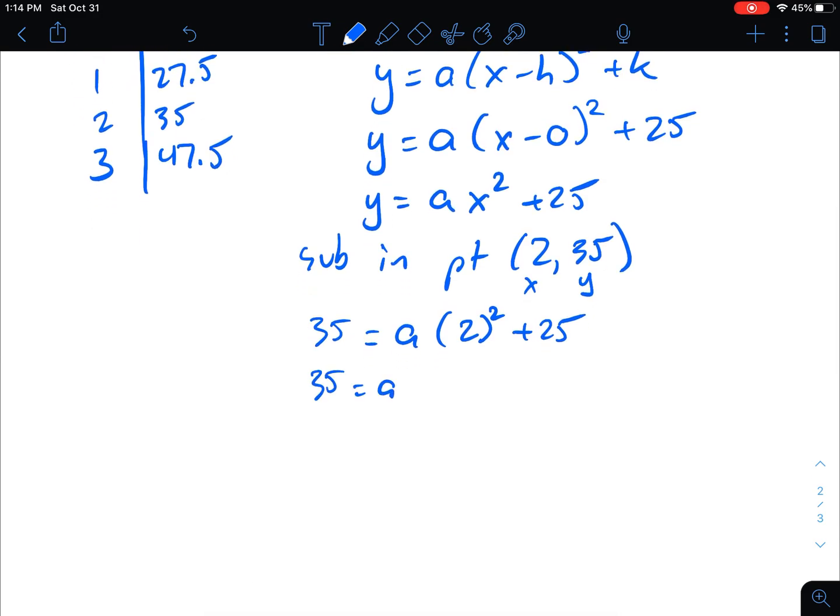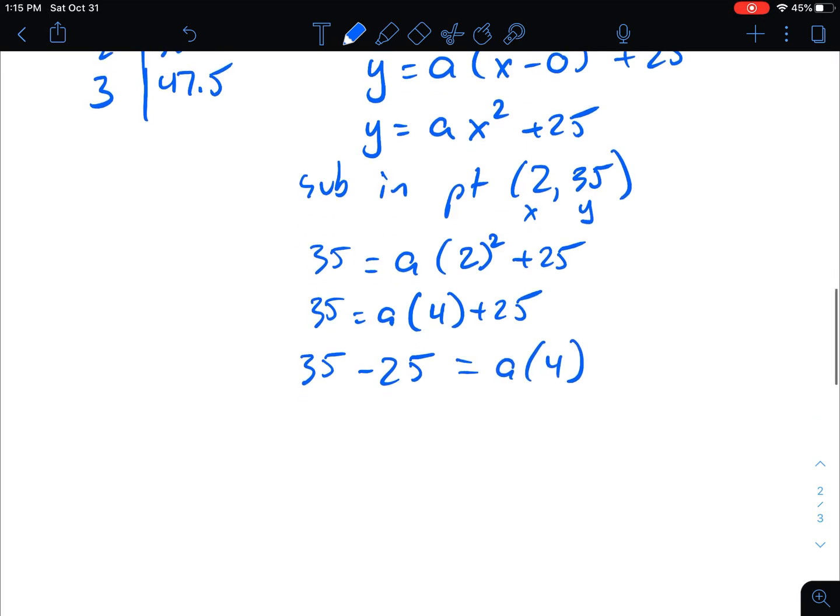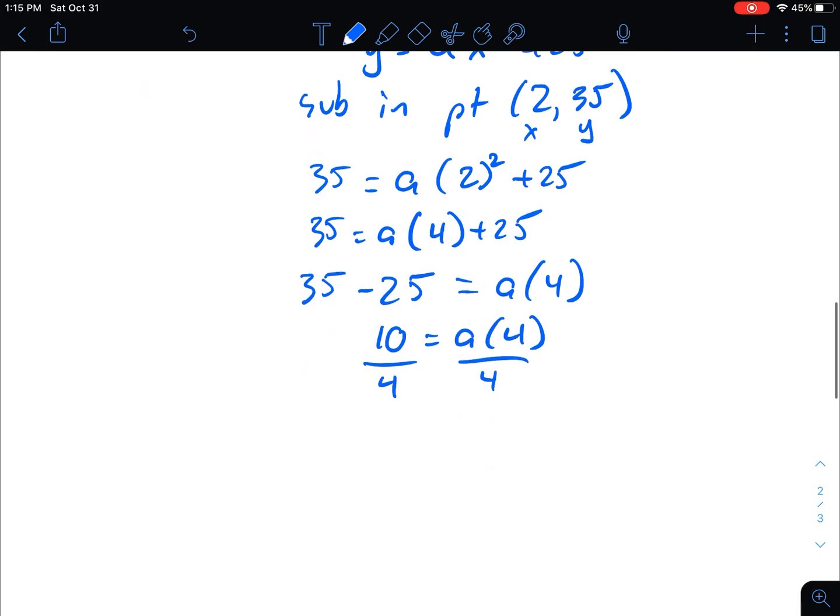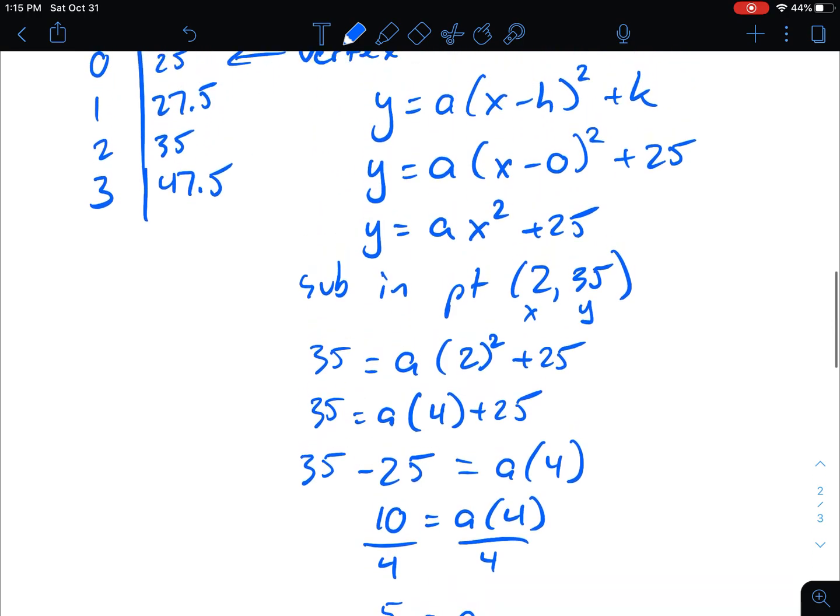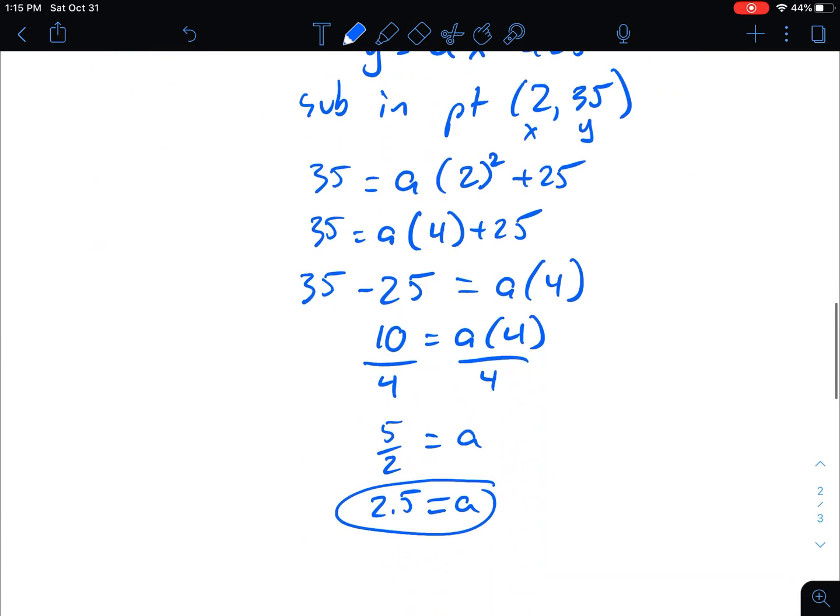And we get 35 equals a bracket, 2 squared is 4, plus 25. We're going to bring the 25 to the left side, make it negative. You always switch the sign when you bring it to the other side of an equation. 35 minus 25 is 10. And then we're going to divide both sides by 4 to get a by itself. And this would become 5 over 2 equals a, or 2.5 equals a. This one uses a lot of decimals, so 2.5 probably is appropriate, or you could just leave it as a fraction of 5 over 2.